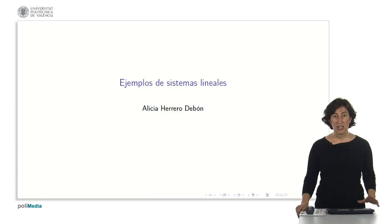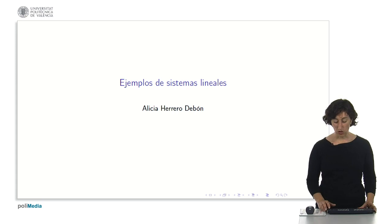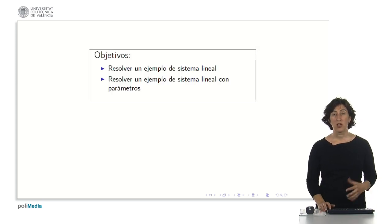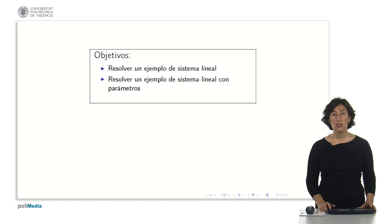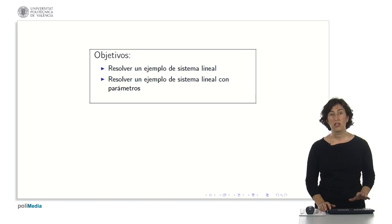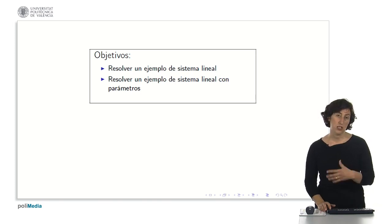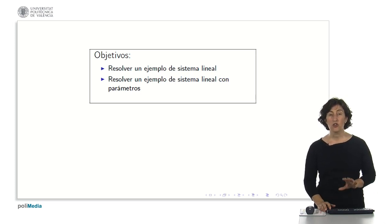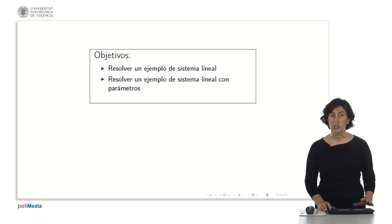In this unit we are going to see some examples of how to solve linear equation systems using the Gauss method. We are going to see an example to remember the Gauss method, and then we will see a couple of examples where we solve linear equation systems using the Gauss method but where all the coefficients of the system are not known — that is, they have parameters.